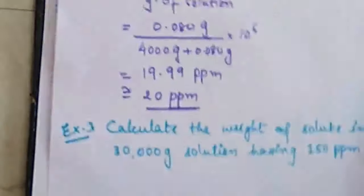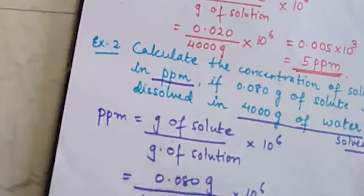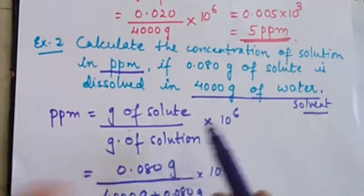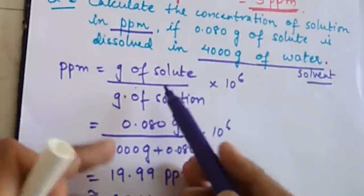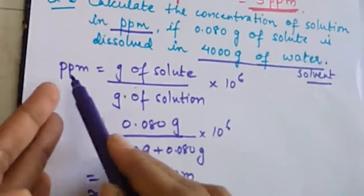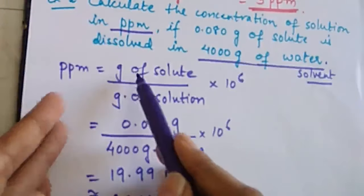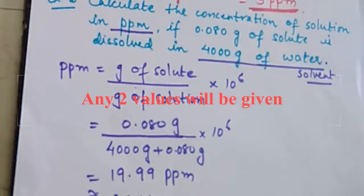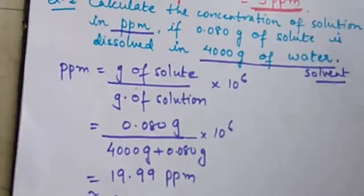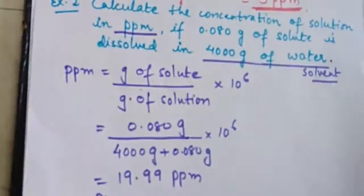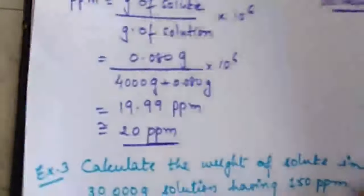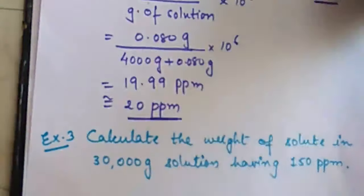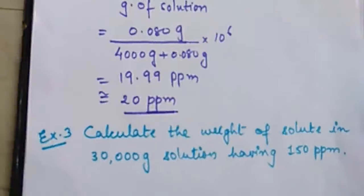In the PPM formula, out of the three variables — PPM, grams of solute, and grams of solution — any one can be unknown. If you need to calculate PPM, the other two are given. If the weight of the solvent is given, add solute weight to get solution weight. This formula is used for solutions expressed directly in PPM. If the formula weight of a chemical is available, another method must be used.